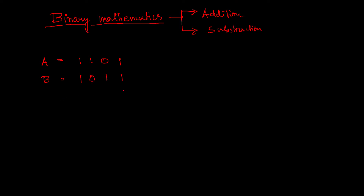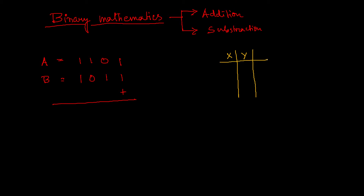If I want to add A and B, what will be the result? To understand this, we need to understand what happens when we add one and one in binary. It's better to understand a simple table for binary addition. If I have two one-bit binary numbers X and Y — note that A and B are four-bit numbers, but X and Y are each one-bit — and F is the result, what does the table look like?